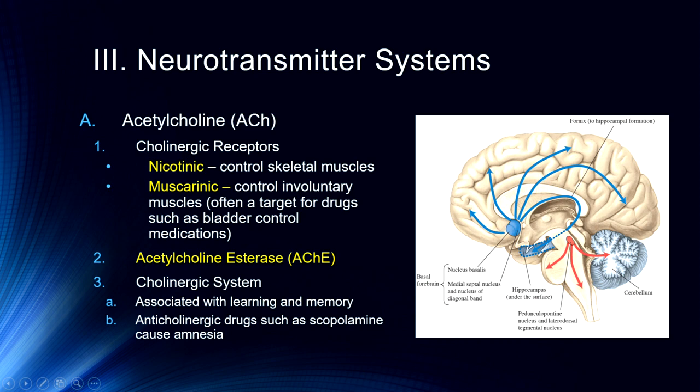If we look at the acetylcholine system within the brain, we have broad areas of the brain projecting from subcortical structures like the basal forebrain and the hippocampus — which is where we get involved with memory — out to all of the association areas of the cortex. We also have projections to the cerebellum, which are important for motor functions, and down to the tracks within the medulla and the pons, which are involved in regulating the body's internal environment.